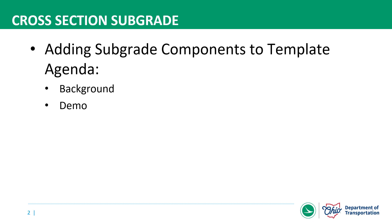Hi, this is Matt in the ODOT CAD Services Office. In this video, we're going to look at how to add your subgrade components to your templates used in your corridor model. Our office receives a lot of questions about this, and we also see a lot of example files provided to us during various support requests that are just missing the subgrade components that should be there. So we'll start with a little background information, and then we'll show a short how-to demo.